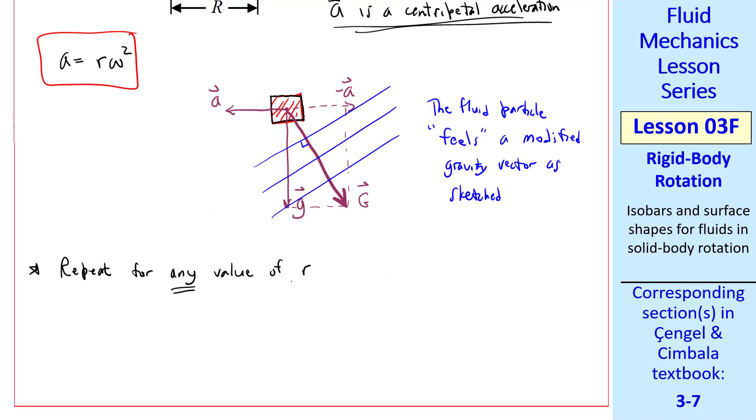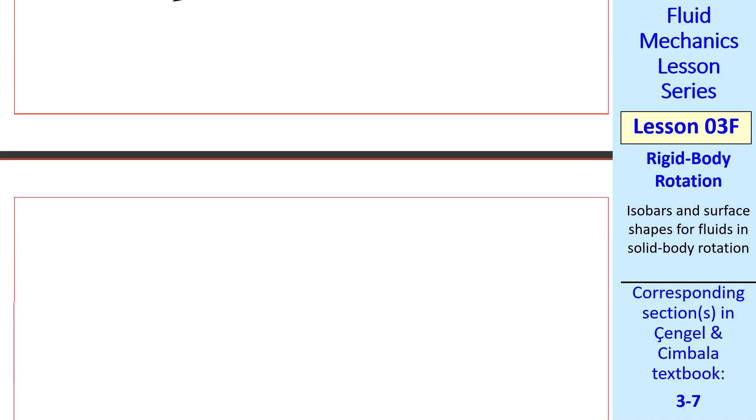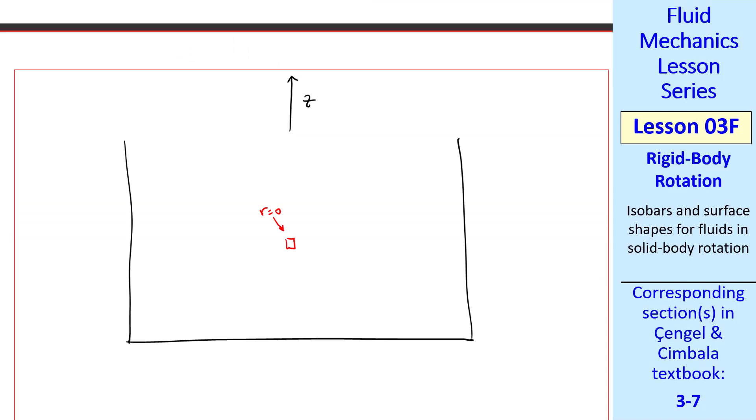Now repeat this for any value of radius r. At the center of rotation where r equals 0, there's no centripetal acceleration, so the isobars are just flat, since A equals 0, capital G equals little g. At some other radius, the isobars are tilted perpendicular to the local g. At an even larger radius, since the magnitude of A is bigger, capital G will also be bigger and will be tilted more to the right. We can keep doing this for all radii.